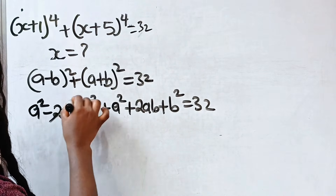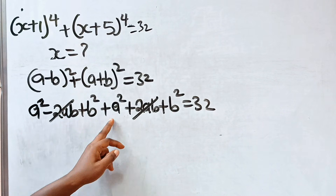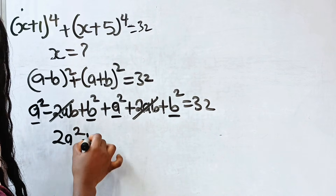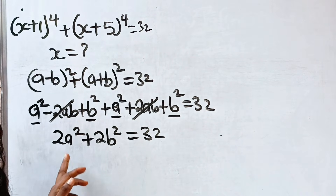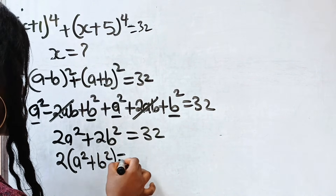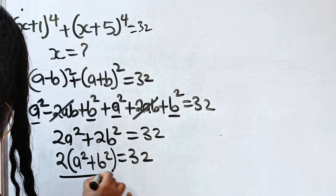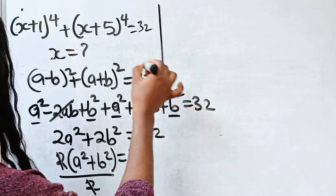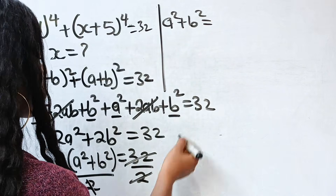The minus 2ab and plus 2ab cancel out, giving zero. We are left with a squared plus a squared, which is 2a squared, plus 2b squared equals 32. Factoring out 2 and dividing both sides by 2, we get a squared plus b squared equals 16.